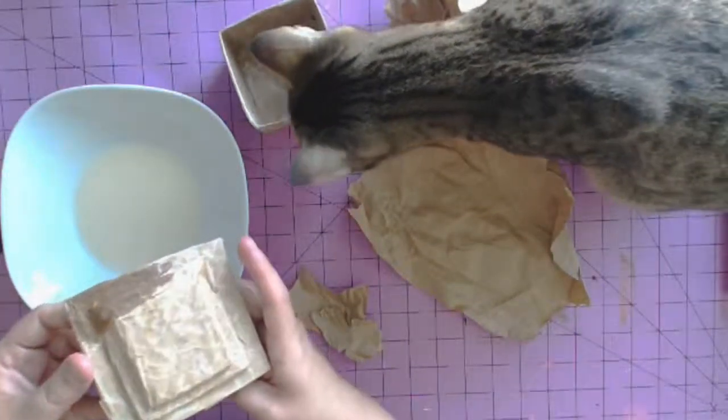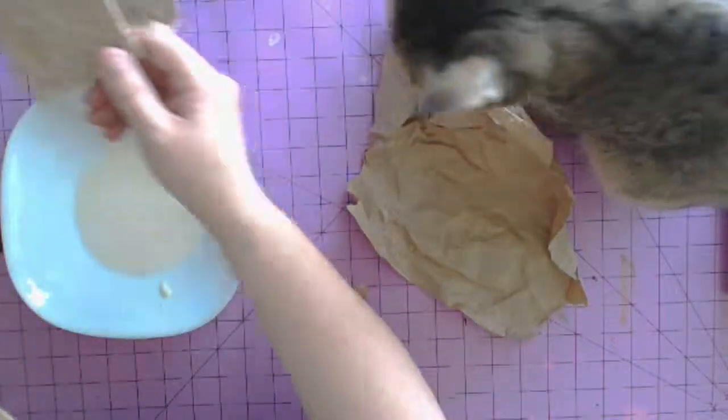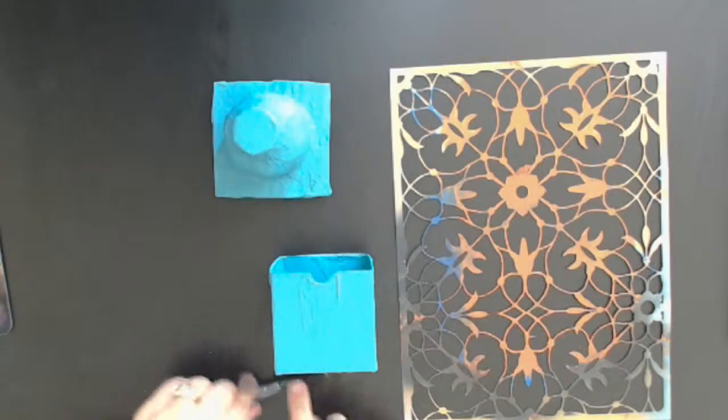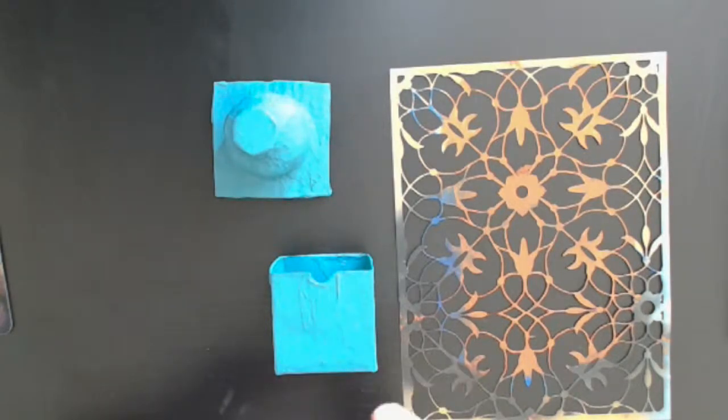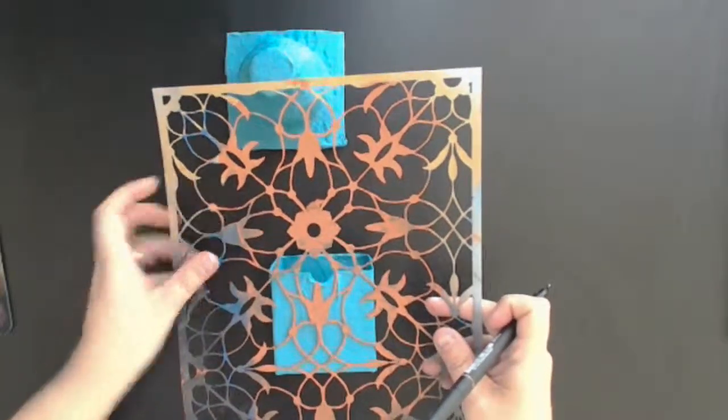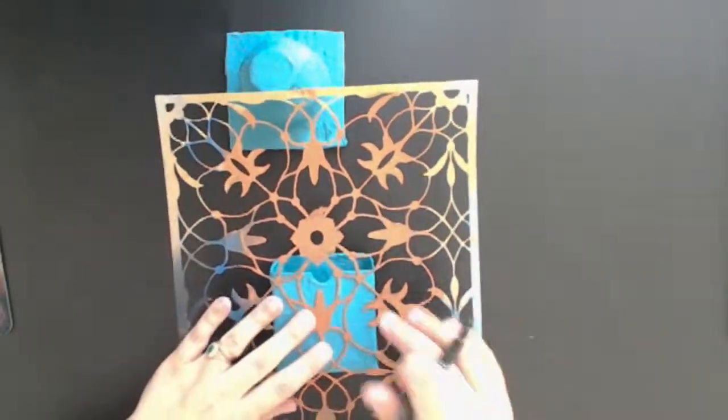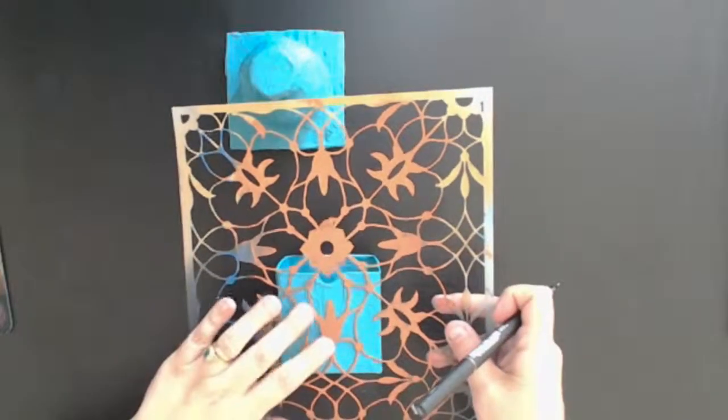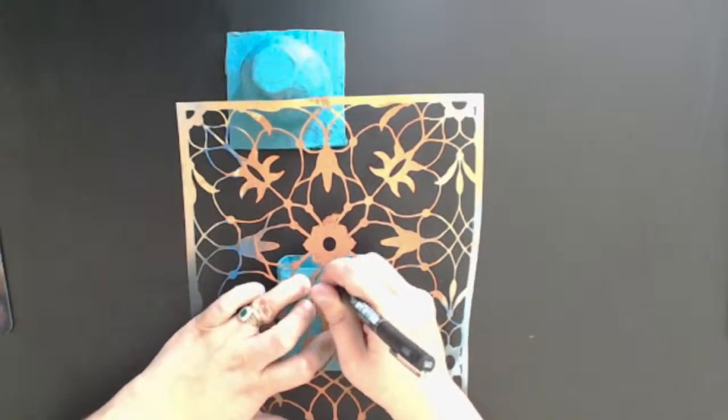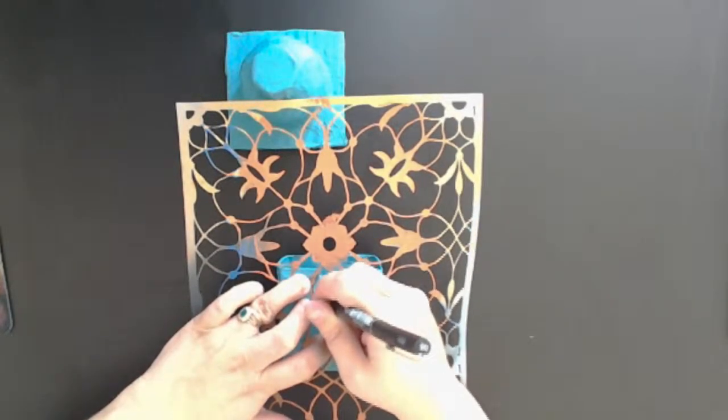And of course the hardest part about the paper mache is waiting for it to dry. It dried over the course of several days and it took me probably about a week, week and a half to get the paper mache just the way that I wanted it. Once it was dry I added a base coat of acrylic paint kind of in this teal greenish blue color. And then once that was dry I chose this stencil.